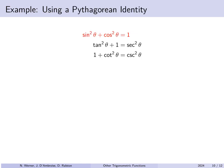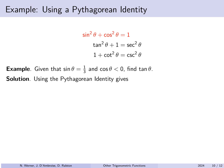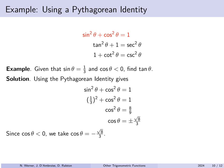Let's use these Pythagorean identities in an example. Given that the sine of an angle is 1/3 and the cosine is negative, find the tangent. Using sin²θ + cos²θ = 1 with sin θ = 1/3, we can solve for cos²θ, giving cosine of theta equals ±√8/3. Since cosine must be negative, we choose cosine of theta = −√8/3. Now that we know sine and cosine, the tangent is sine over cosine, which simplifies to −1/√8.